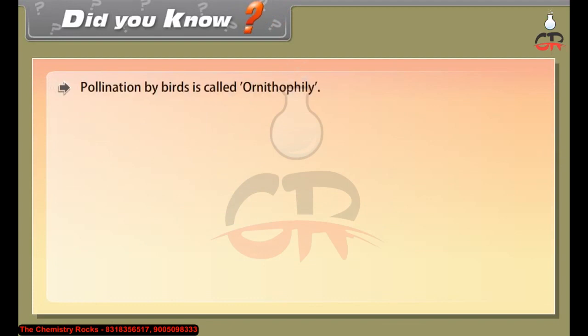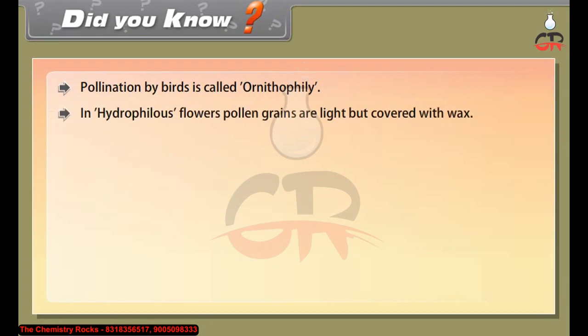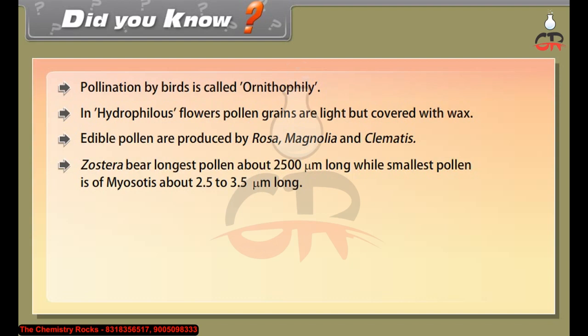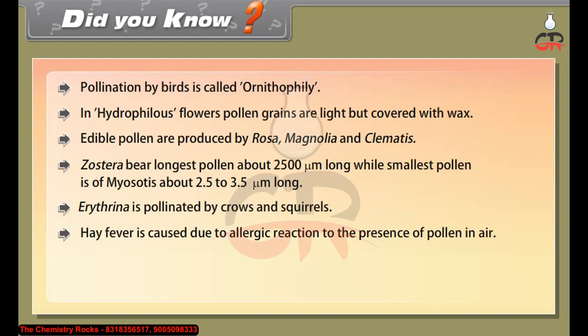Did you know? Pollination by birds is called ornithophily. In hydrophilous flowers, pollen grains are light but covered with wax. Edible pollen are produced by Rosa, Magnolia, and Clematis. Zostera bears the longest pollen, about 2500 micrometers long, while the smallest pollen is of Myosotis, about 2.5 to 3.5 micrometers long. Erythrina is pollinated by crows and squirrels. Hay fever is caused due to an allergic reaction to the presence of pollen in the air.